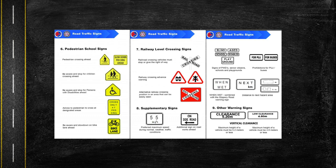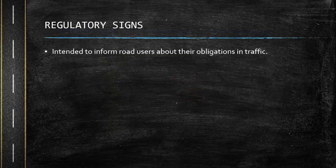Under supplementary signs we also find additional signs for road works ahead when the road is under construction, as well as signs for PWD, senior citizens, schools, playgrounds, and provisions for PUJ buses, etc. The last one would be other warning signs, which show vertical clearance — indicating whether the vehicle can use that roadway based on its height.